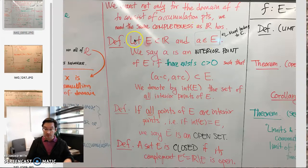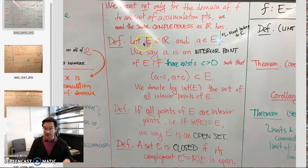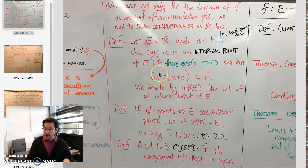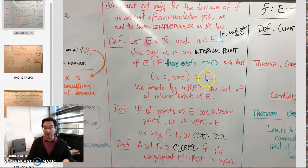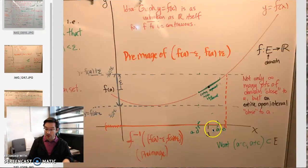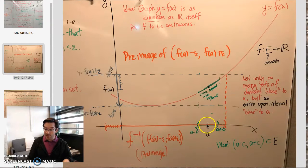The definition begins with what it means for a point to be an interior point of a set. A point A of E is an interior point if there exists a positive number C such that the entire open interval of radius C — that is, A minus C to A plus C — around this point is entirely contained within E itself. On the x-axis, the picture is that the set E, the domain of the function, is an open set.